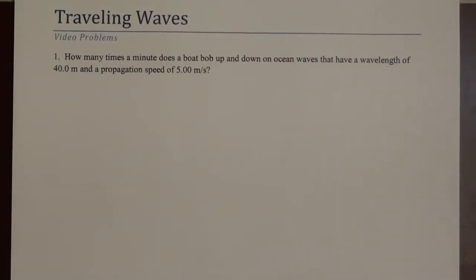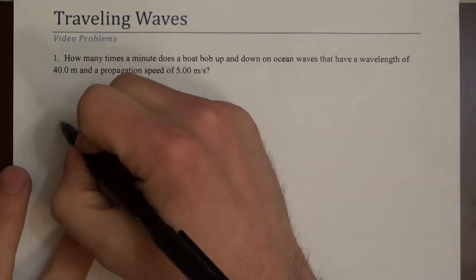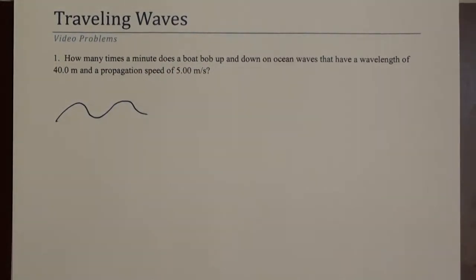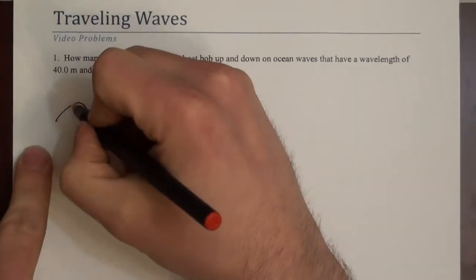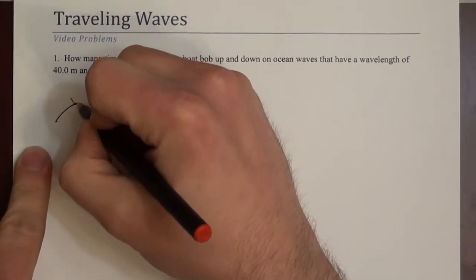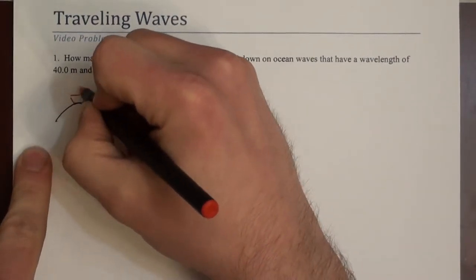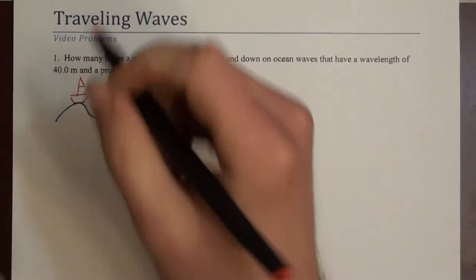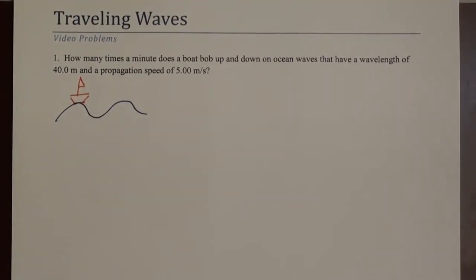So let's picture what's going on here. We've got ocean waves, so maybe those look something like this. We have a boat sitting on top of one of these waves, at least sitting on top momentarily. And then as the wave passes underneath the boat, the boat bobs down.